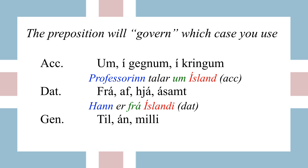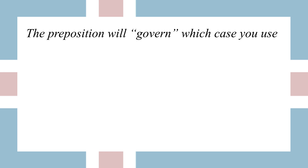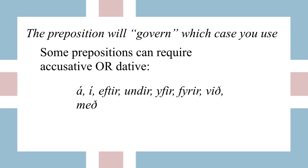The prepositions til (to), an (without), and mittli (between) always take genitive after them. So 'we go to Iceland' — Iceland is the object of til and it's in genitive. There are also a couple of prepositions that can require accusative or dative depending on the meaning — I'll be going into that in greater depth in a different video.